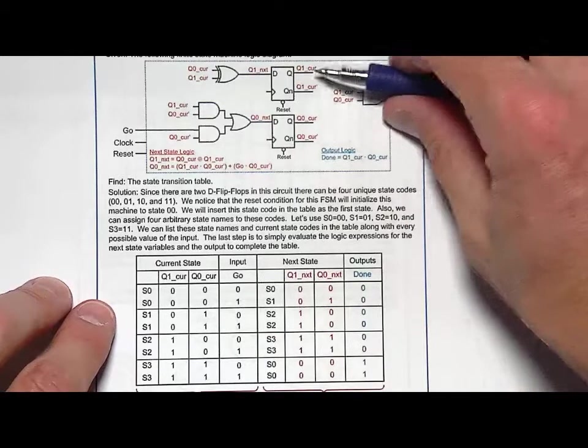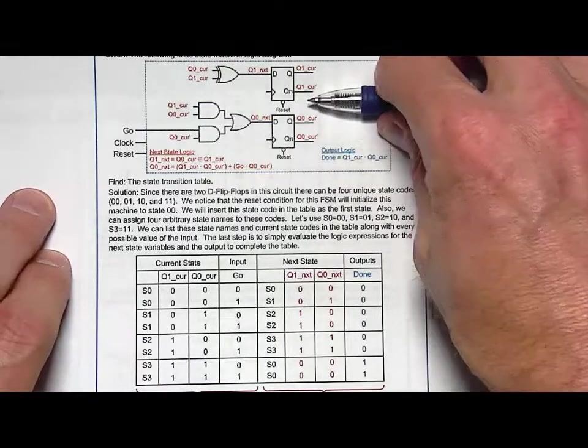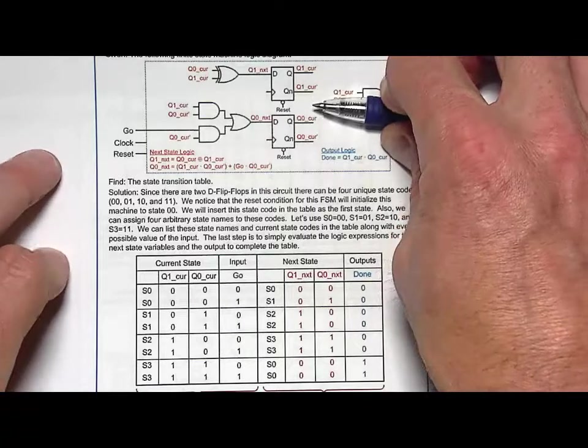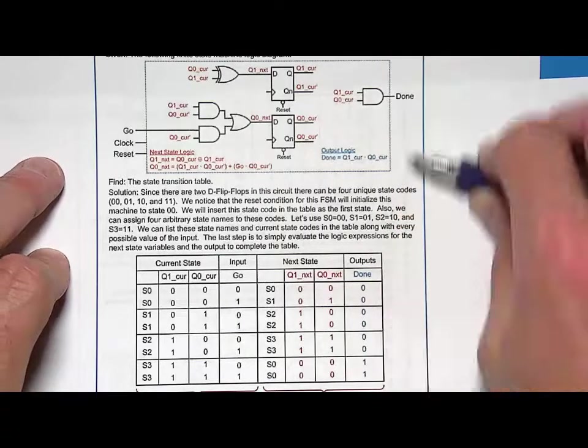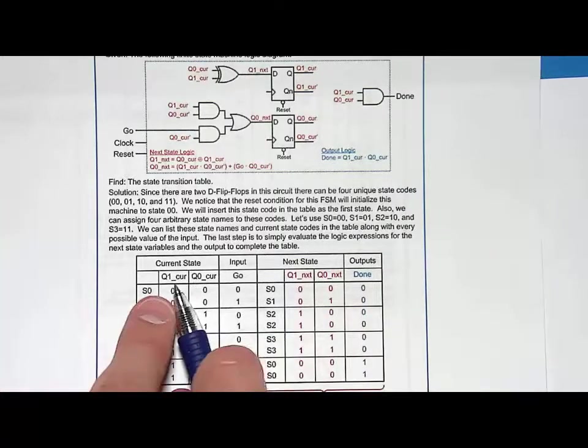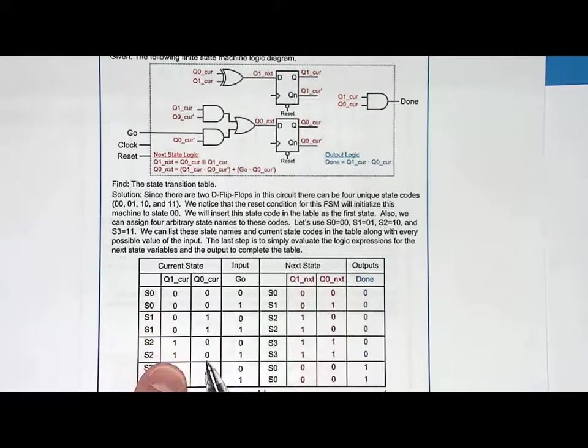What you do is, since you had two D flip-flops, you know that the current state could possibly take on four unique values: 0,0, 0,1, 1,0, and 1,1. So what we do is give them all a unique name, list them in here, q1cur and q0cur, and we list it all down: 0,0, 0,1, 1,0, 1,1.